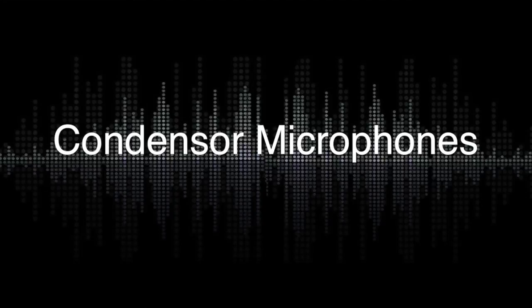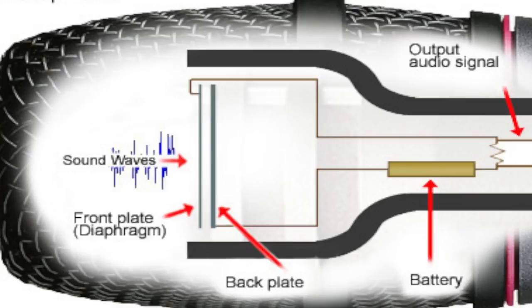Condenser mics usually have a much larger diaphragm versus a dynamic mic. The diaphragm vibrates slightly in response to sound pressure. Condenser mics are usually more expensive compared to dynamic mics. A battery, dedicated power supply, or phantom power is required to power these mics. When it's absolute fidelity to the source you're after, reach for a condenser microphone — it will give you the quality that you are looking for.